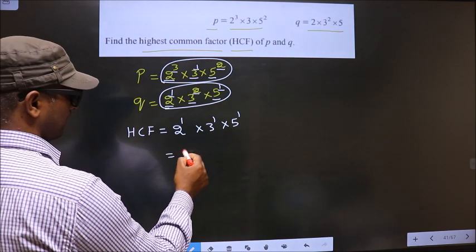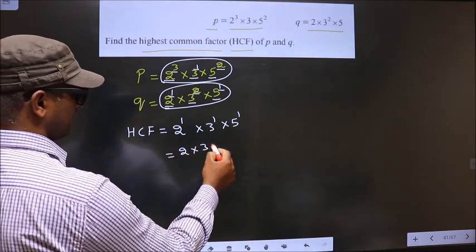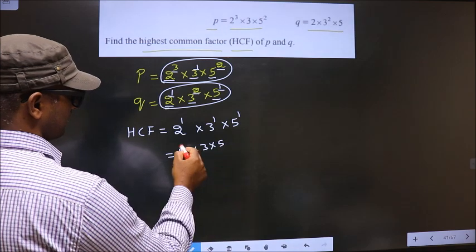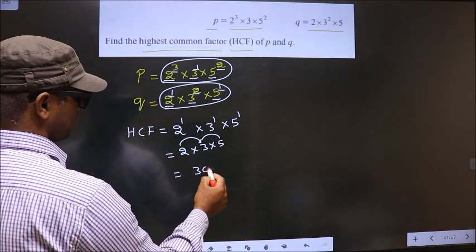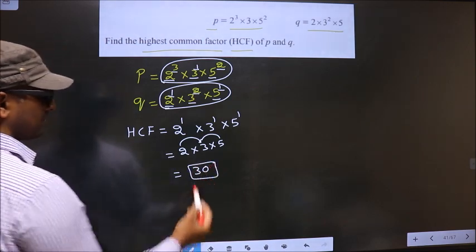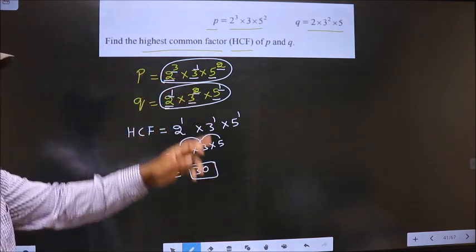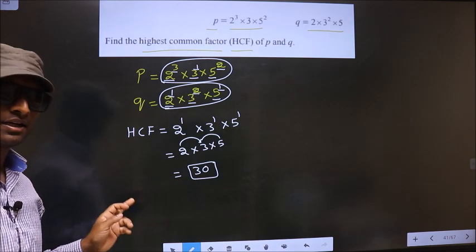So 2 power 1 is 2, 3 power 1 is 3, 5 power 1 is 5. So 2 into 3 is 6, 6 into 5 is 30. So this is our HCF. Am I clear?